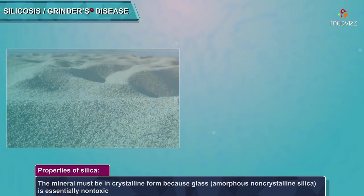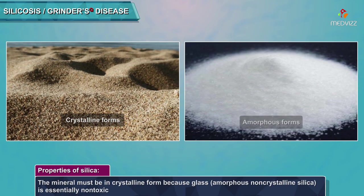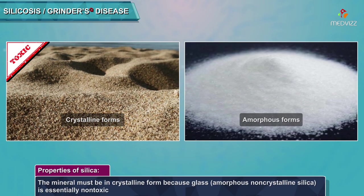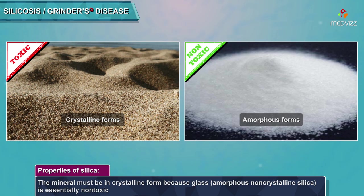The mineral must be in crystalline form because glass — amorphous, non-crystalline silica — is essentially non-toxic in crushed, powdered, or fibrous form.